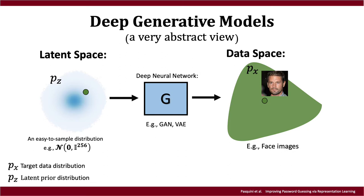In a very broad sense, a deep generative model is nothing more than a deep neural network that is trained to map a space distributed according to a very simple distribution into another space that shows a much more complicated but interesting distribution. The input space, which we call latent space, follows an easy-to-sample distribution chosen as a hyperparameter before training — typically a multi-dimensional Gaussian distribution.